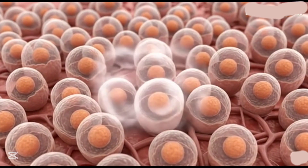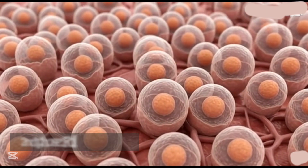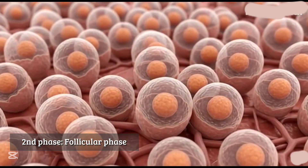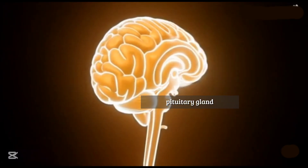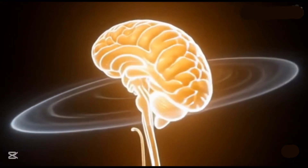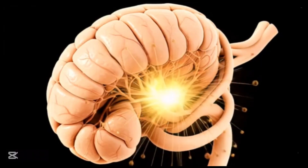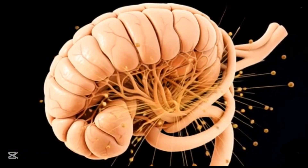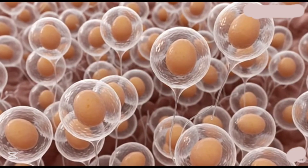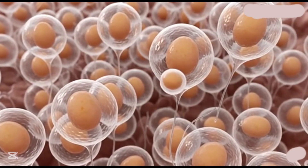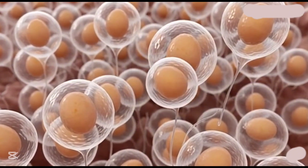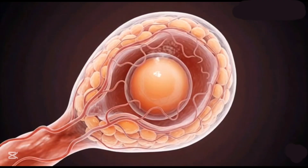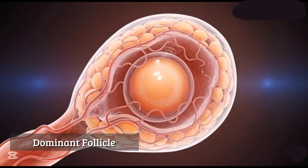Inside the ovary, there are growing follicles which contain immature eggs — and that starts the second phase called the follicular phase. Your brain contains a pituitary gland located at its base. This gland releases a hormone called FSH, which causes tiny sacs called follicles to grow inside your ovary. Each follicle contains an immature egg, and one of these follicles will become the dominant one, meaning its egg will mature.